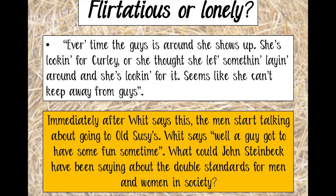It seems like she can't do anything right except sit in the house all day talking to no one. And we have another double standard: as soon as Whit says this, the men start talking about going to Old Susie's — which we can infer is a brothel. And Whit says, 'Well, a guy's got to have fun sometime.' So what could Steinbeck have been saying about the double standards for men and women? Curly's wife is expected to be at home by herself all day, while it's perfectly acceptable for the men — including Curly — to go off to a brothel. Maybe definitely a victim in that situation.